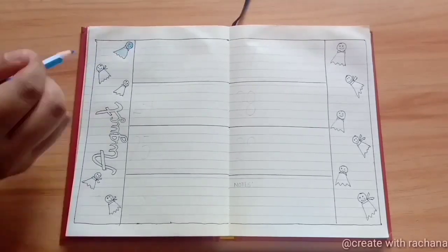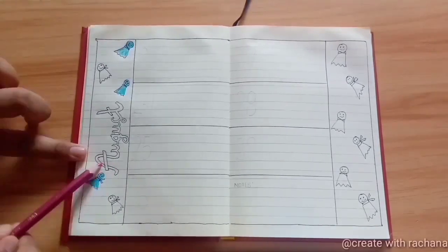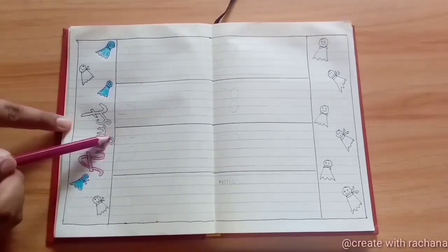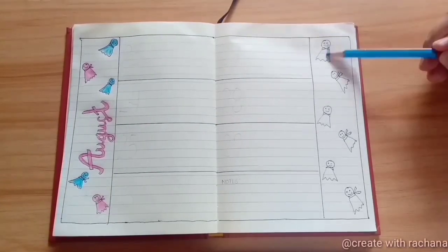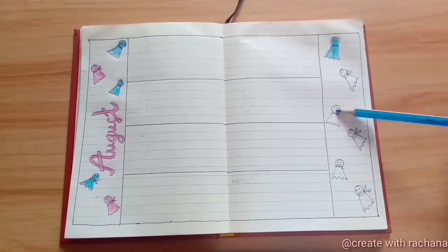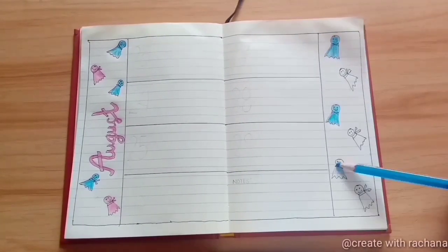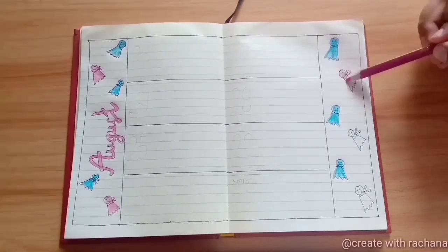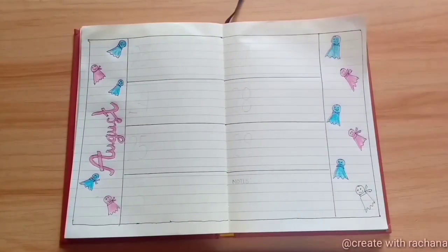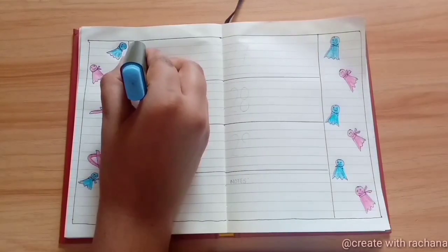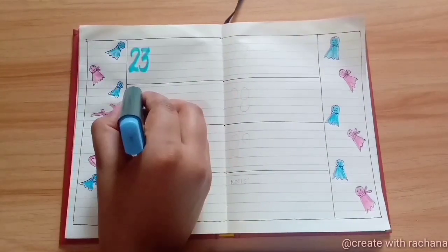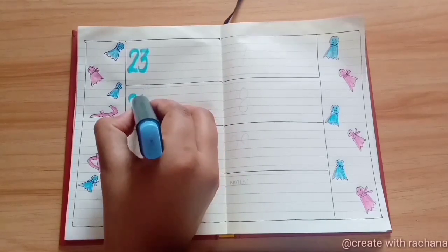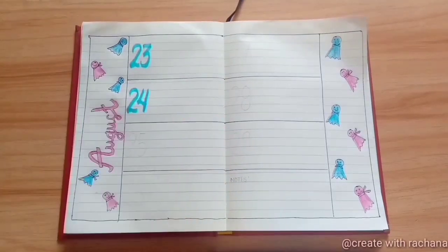Now you can add some color to your doodle. After completing the work with the doodles, now you can write the date on these small square boxes.